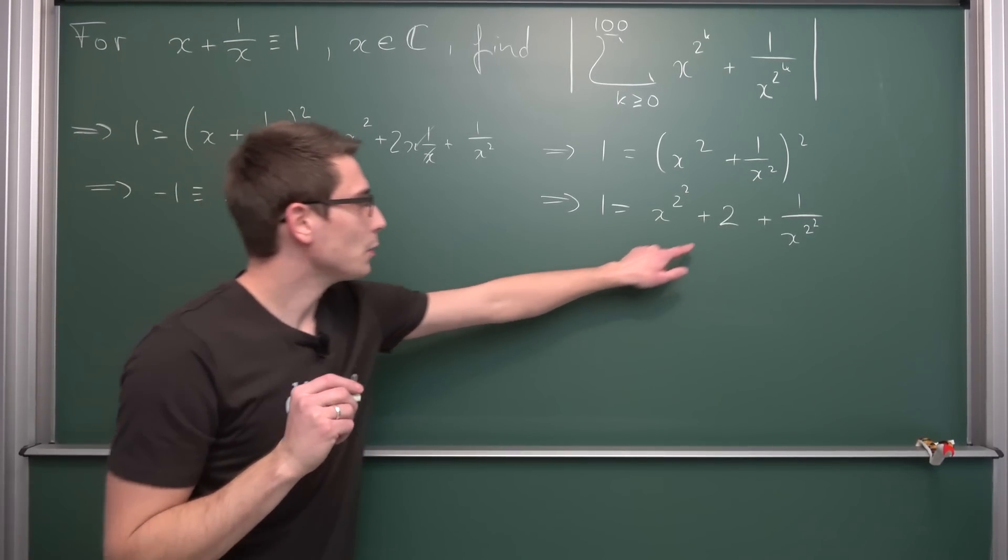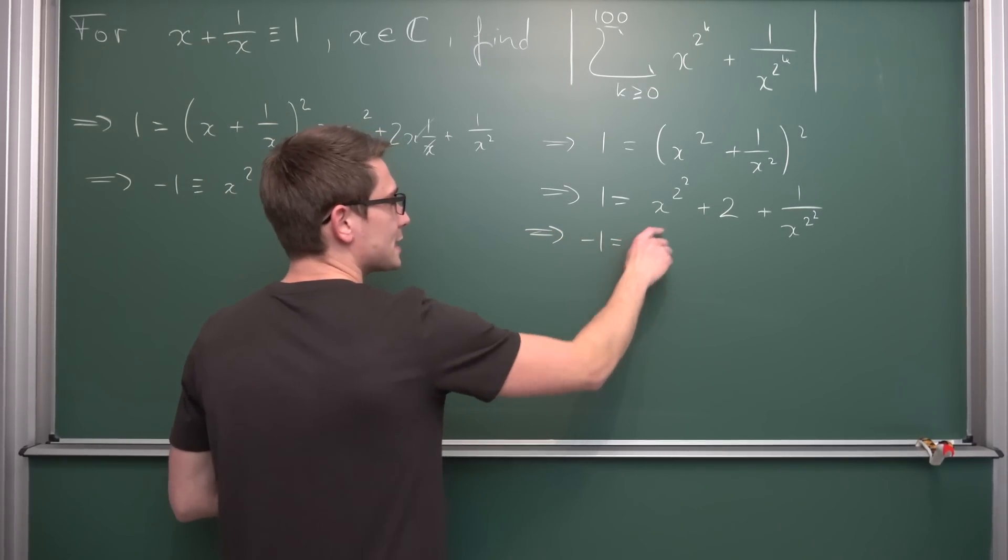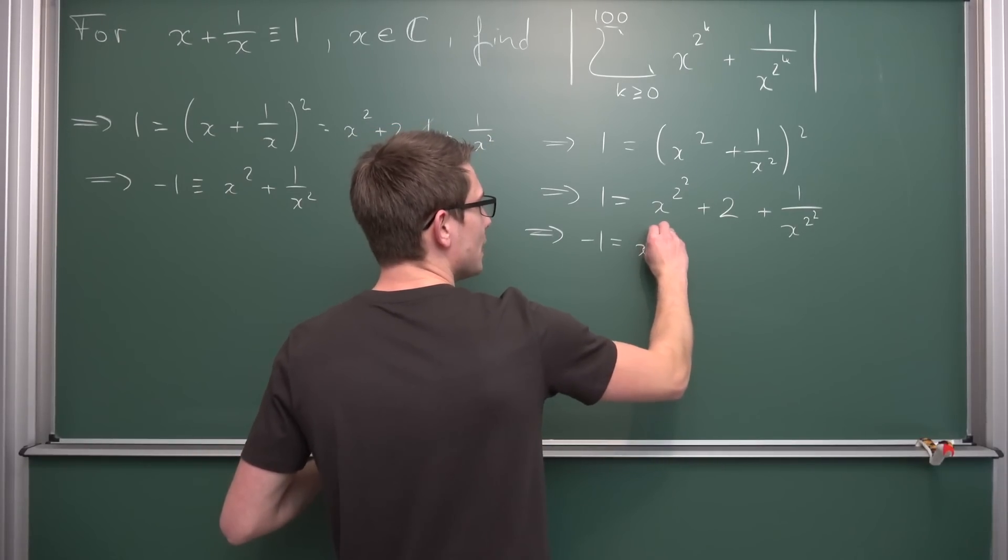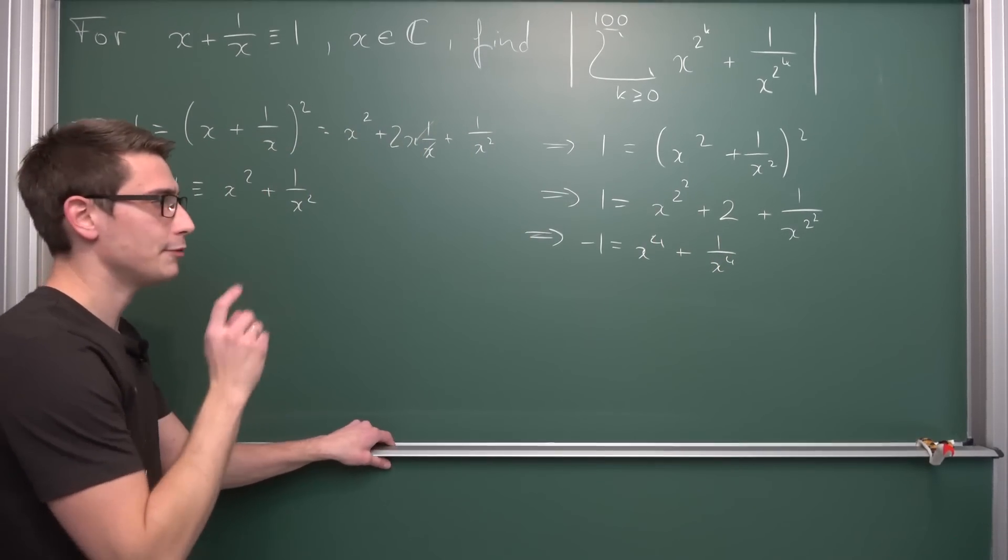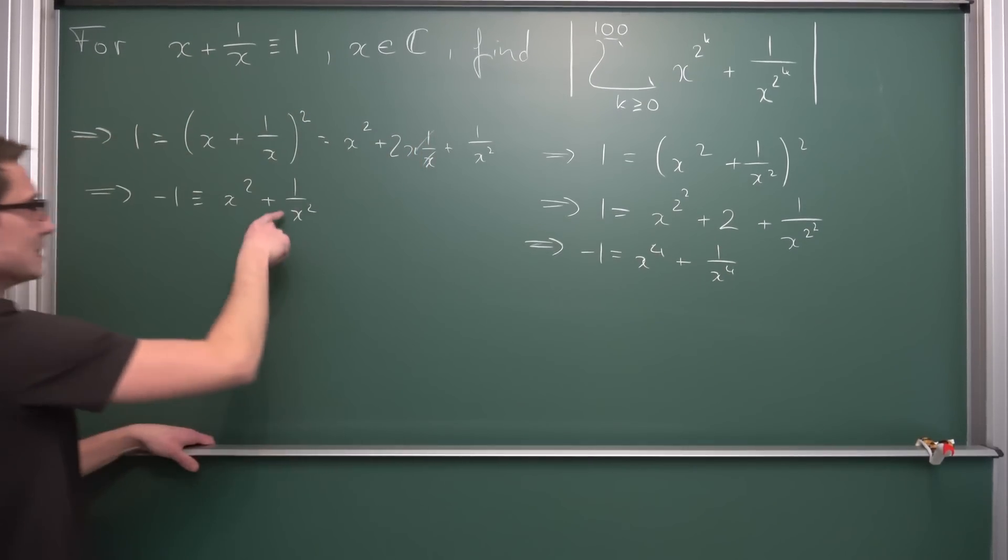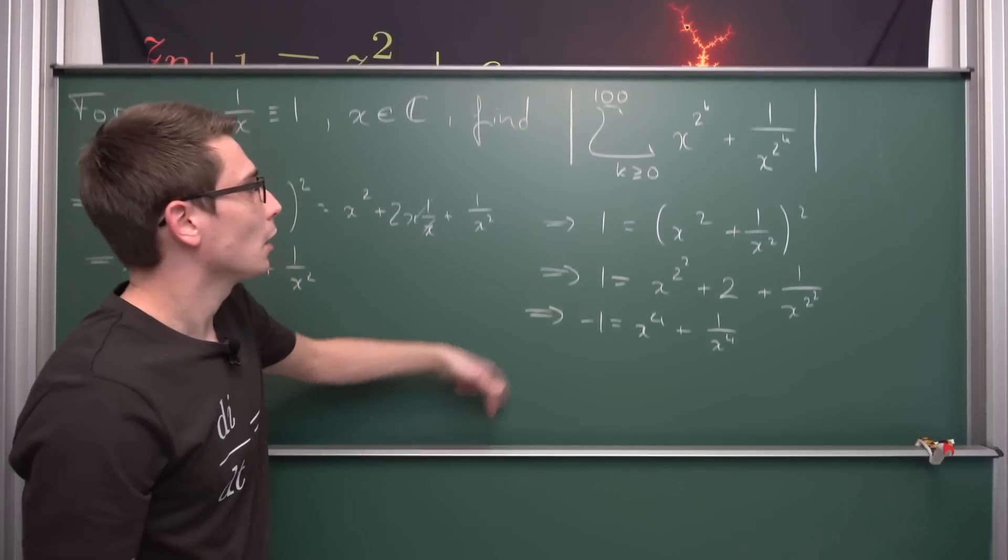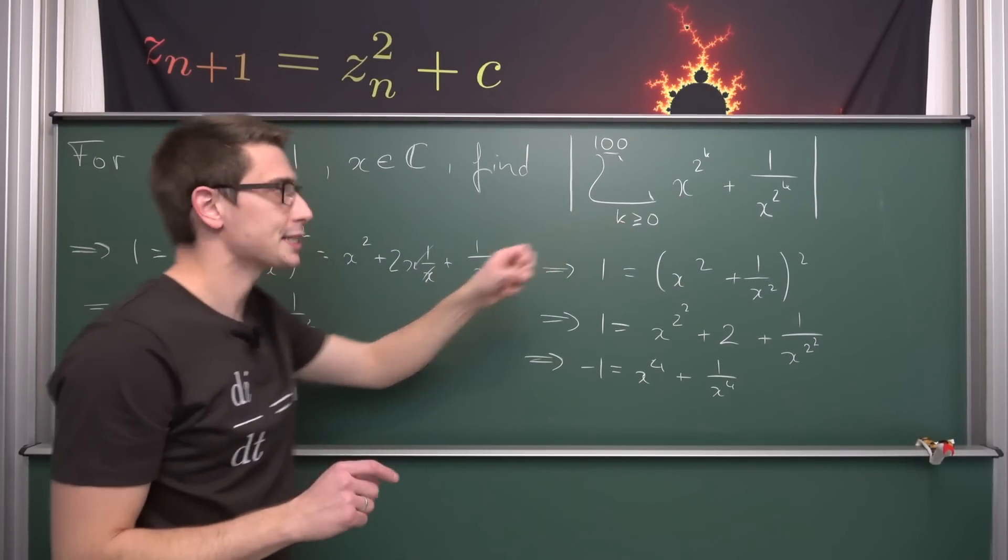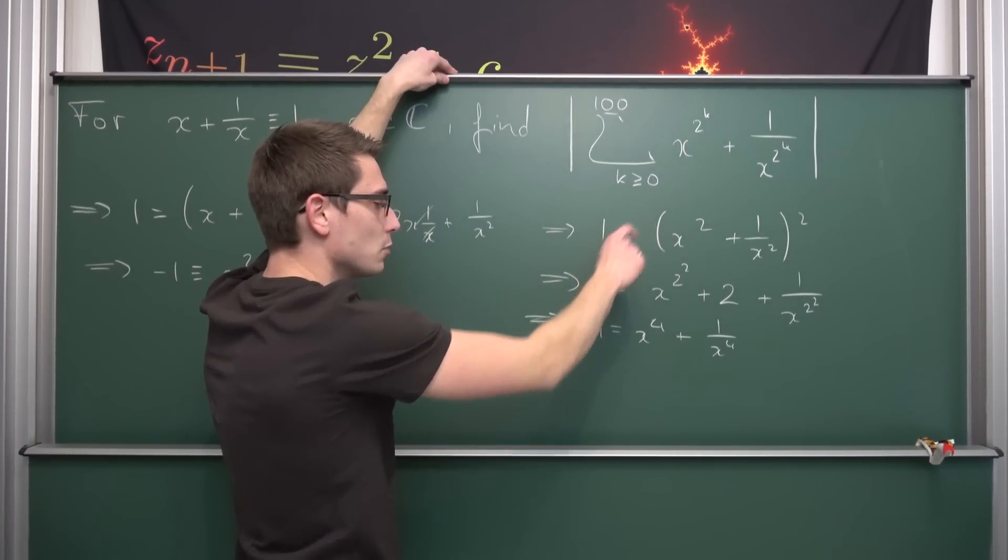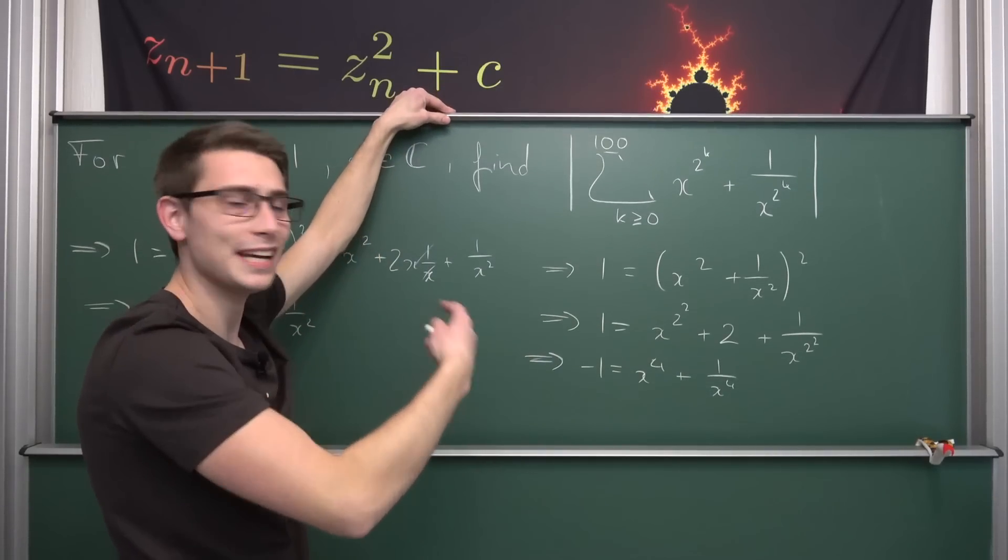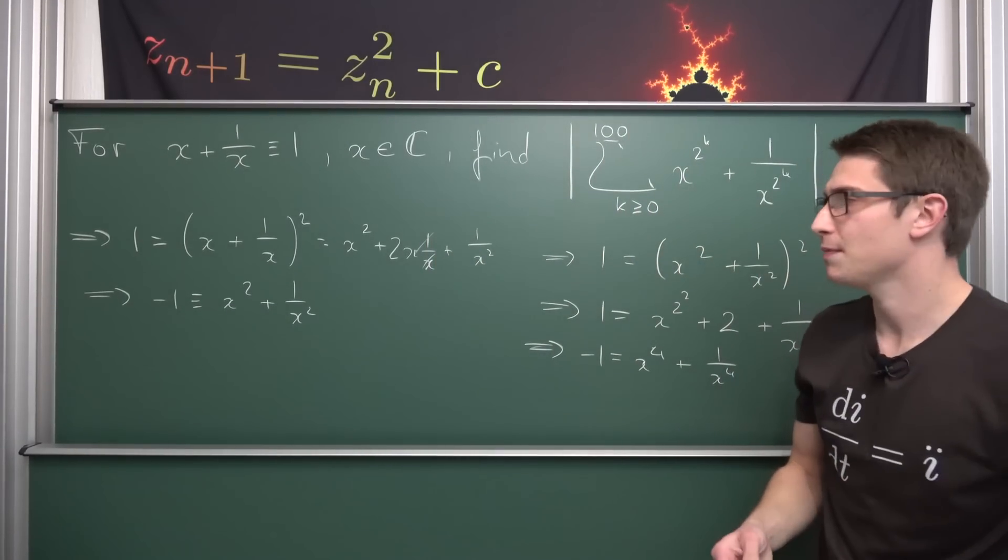Now we can subtract 2 once again on both sides, leaving us with negative 1 being x to the 4th power plus 1 over x to the 4th power. Meaning every time we square a quantity like this by the binomial theorem, we get negative 1 out. On the 0th member we got 1 out. On the first member we get negative 1, on the second member negative 1, on the third member negative 1, and so on up until 100. You can easily prove this by mathematical induction.